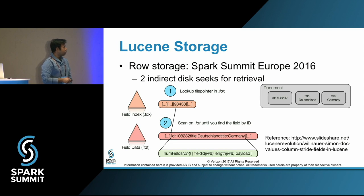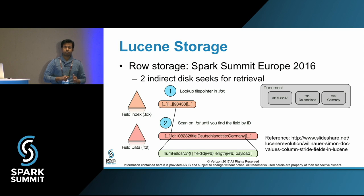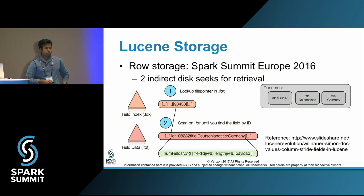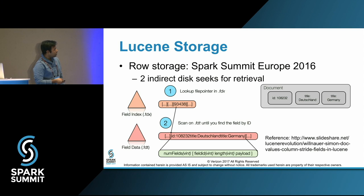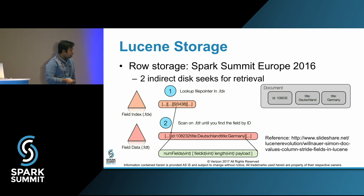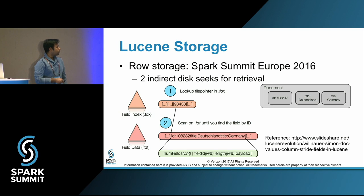We did the first version of this at Spark Summit, where we showed the row storage version. In that version, we were storing data as a row-based format for analysis. The problem with that is that to find a document with a given ID — say 93438 — we needed two indirect disk seeks: one to go to the ID, and then one more to retrieve the field. This problem is well known, figured out around 2013. Although we put it in our flow, we needed more runtime.